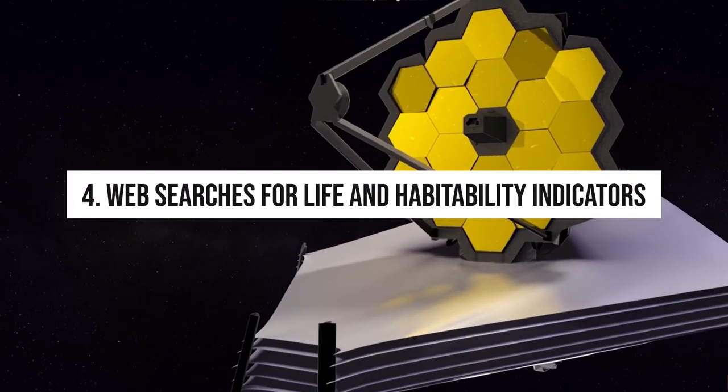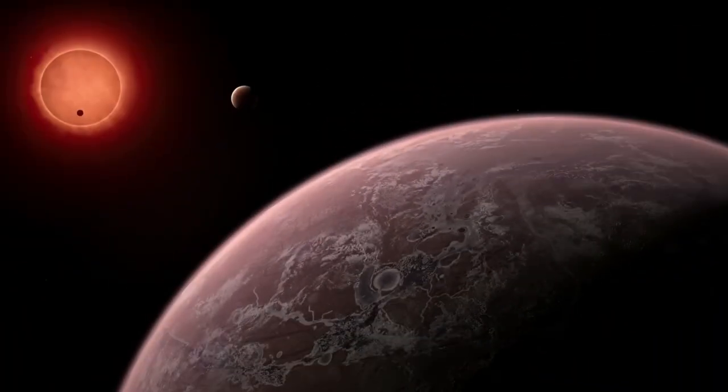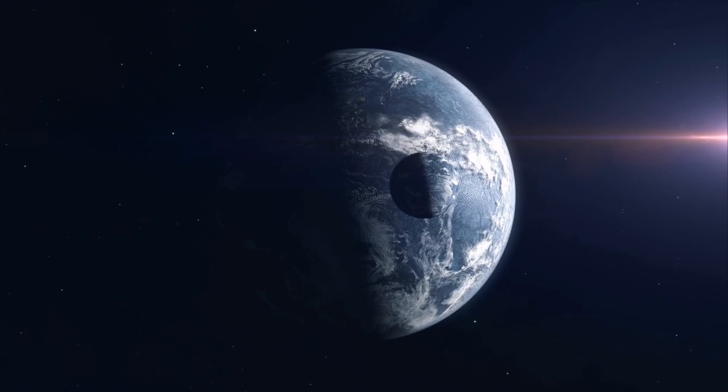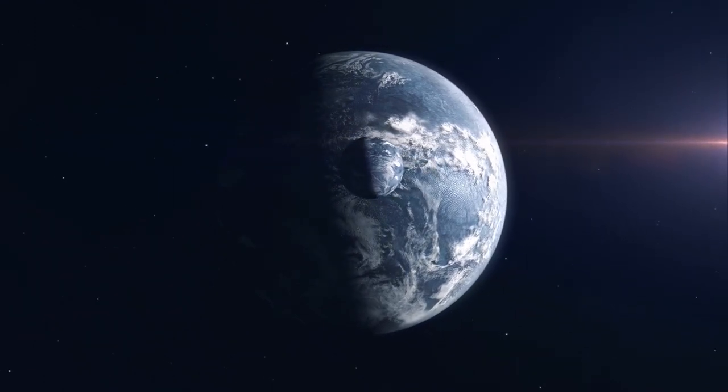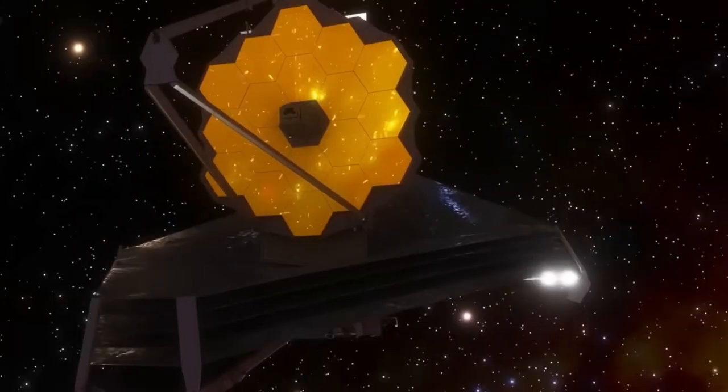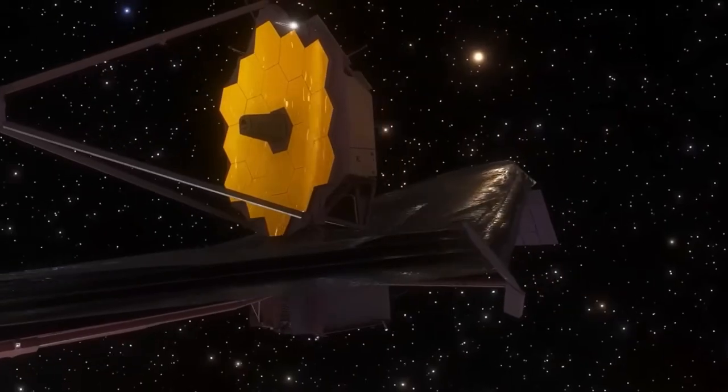Number 4. Webb searches for life and habitability indicators. Exploring worlds like WASP-39b is fascinating, but finding another Earth-like habitable planet is one of the holy grails of exoplanet science, and Webb's space telescope is perfectly positioned to characterise these alien worlds.